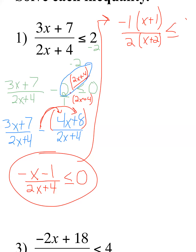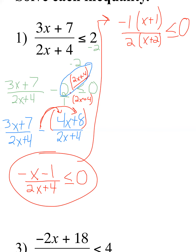Once I get the whole expression on one side equal to 0, I factor the numerator and the denominator. That reveals my critical values. From the numerator factor (x + 1), I get a critical point at x = -1. From the denominator factor (x + 2), I get another critical point at x = -2. Let's make our number line and put those on there.